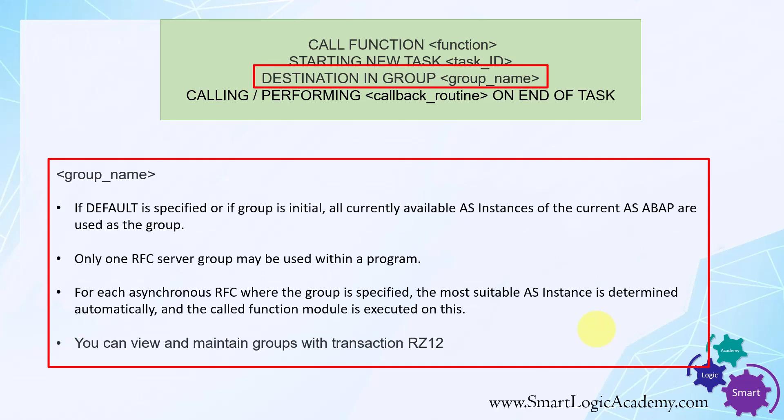Group name: if you specify DEFAULT as the group name, or leave it blank or initial, all currently available application server instances of the current application server are used as the group. You can use only one RFC server group within a program. For each asynchronous RFC call where the group is specified, the most suitable application server instance is determined automatically and the function is executed on it.